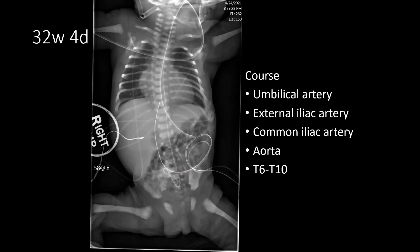Now let's assess the course of an umbilical arterial catheter and differentiate it from an umbilical venous catheter. The umbilical arterial catheter tends to have a loop or a little curl at its beginning where it enters the umbilicus, courses down the umbilical artery to the external iliac artery, into the common iliac artery, and then into the aorta. It then travels up the left of midline within the aorta, ideally to the T6 or T10 level. Notice this patient also has another catheter that has a smooth course going up to the right side of the spine over the liver into the cavoatrial junction — that is our umbilical venous catheter.